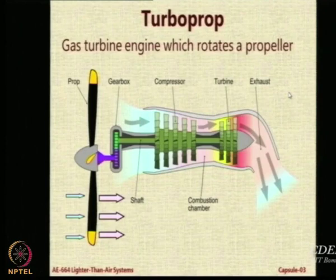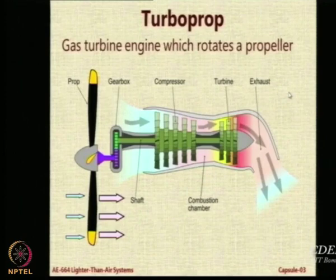So why do we need a gearbox? To reduce the RPM of the propeller. At what RPM does the turbine normally move? In a gas turbine engine, the typical RPM of the turbine is around 30,000 RPM. In fact, for very high power turbines in commercial aircraft, you can also expect 60,000 RPM.